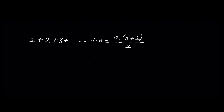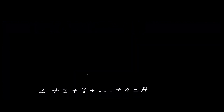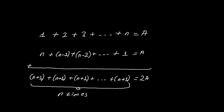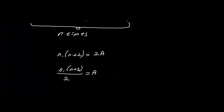Let's say the sum of consecutive positive integers from 1 to n equals a. And let's write these numbers from n to 1. The sum of these two arithmetic sequences will be like that. The left side equals n times (n plus 1) and the right side equals 2a. So we can easily write a equals n times (n plus 1) over 2.